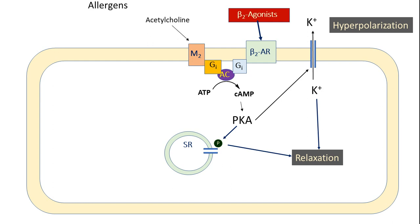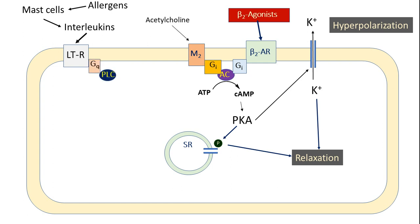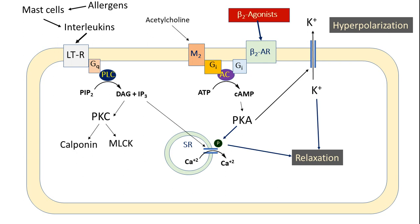In asthma, when allergens attach to mast cells, the mast cells release interleukins — a chemokine signaling mechanism. Interleukins attach to interleukin receptors on bronchial smooth muscle and activate phospholipase C, which cleaves phosphoinositol diphosphate into inositol triphosphate and diacylglycerol. Inositol triphosphate switches on calcium channels on the sarcoplasmic reticulum, while diacylglycerol enhances protein kinase C activity. Protein kinase C phosphorylates troponin and MLCK (myosin light chain kinase), initiating a cascade that ultimately results in smooth muscle contraction.